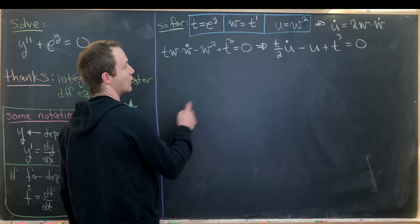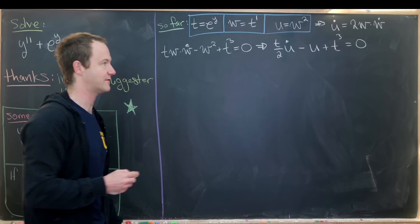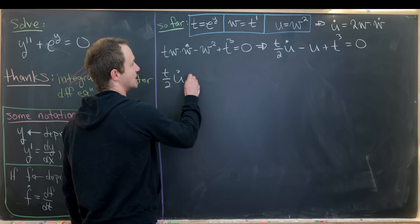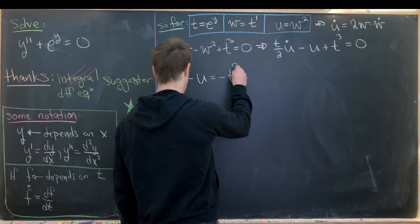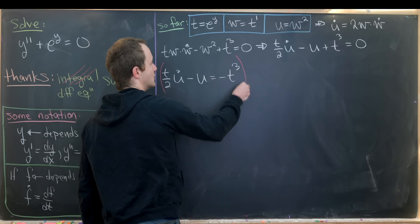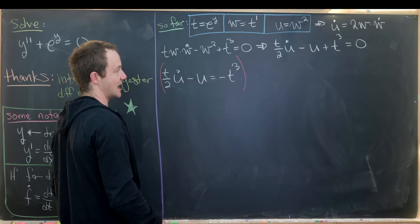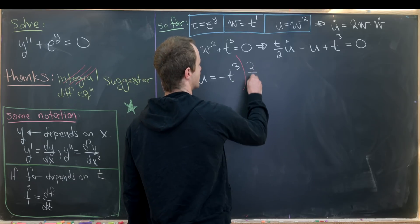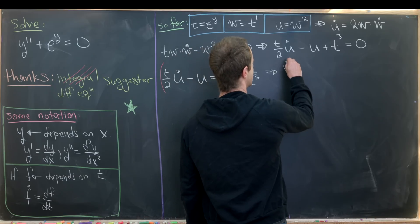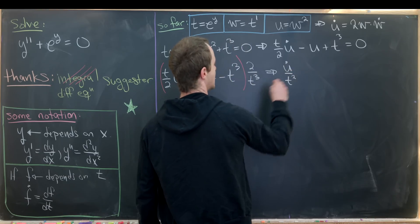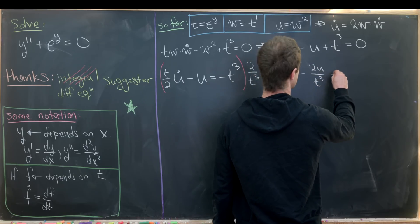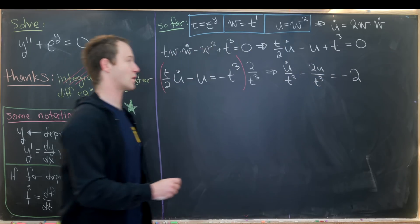To find an integrating factor, we multiply by two over t cubed. That leaves us with u dot over t squared minus two u over t cubed equals minus two. We can recognize by the product rule that the left side is the derivative with respect to t of u over t squared. So we have a very simple equation: the derivative with respect to t of u over t squared equals negative two.